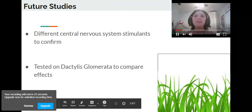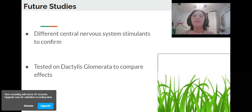Future Studies. Future studies could be conducted with different central nervous system stimulants to confirm that they do not stunt growth. These central nervous system stimulants should be tested on Dactylis glomerata to compare their effects.